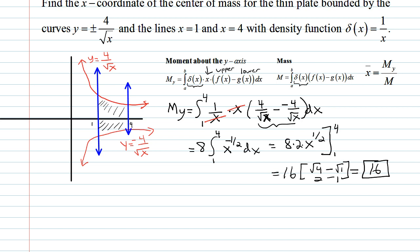Next, let's go get the mass. The mass is found from integrating from 1 to 4 again. But this time there's no x to cancel out. We're going to have the density function, 1 over x. And then once again, the difference between these guys, 4 over root x minus a negative 4 over root x.